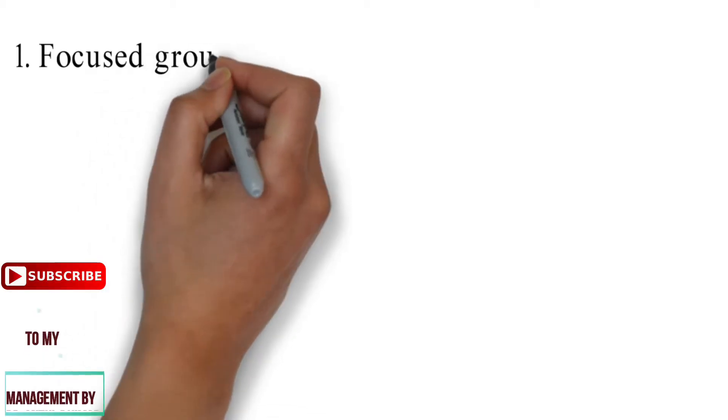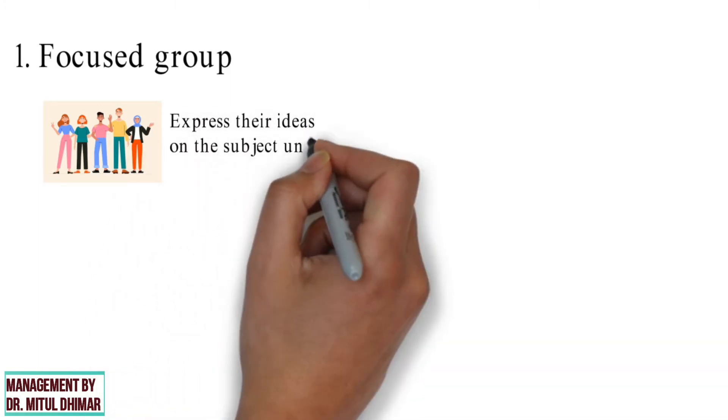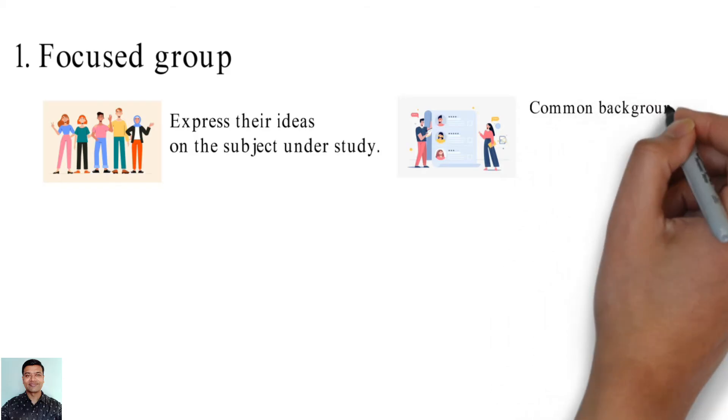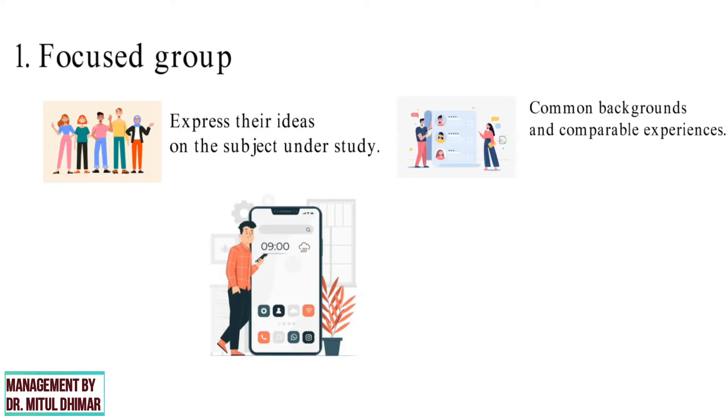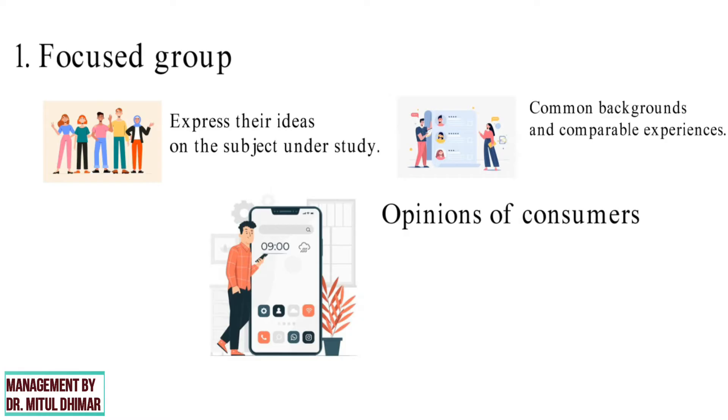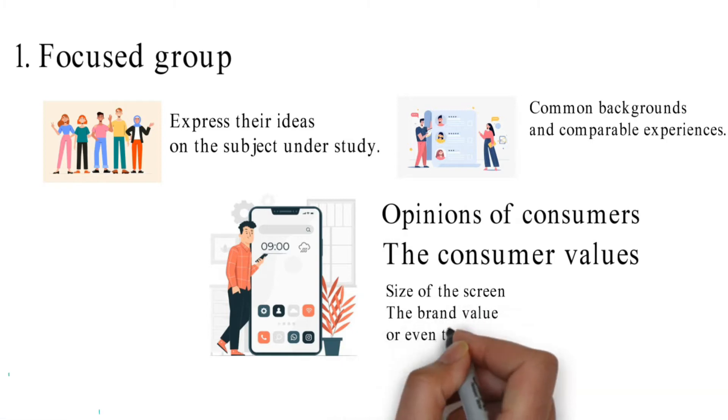Number 1. Focus group. In this method a group of people is chosen and allowed to express their ideas on the subject under study. However, it is important to ensure that when choosing people in a focus group they must have common backgrounds and comparable experiences. For example, a focus group helps researchers to identify the opinions of consumers if they would buy a phone. Such research can help the researcher understand what the consumer values when buying a phone. It can be the size of the screen, the brand value or even the dimensions.